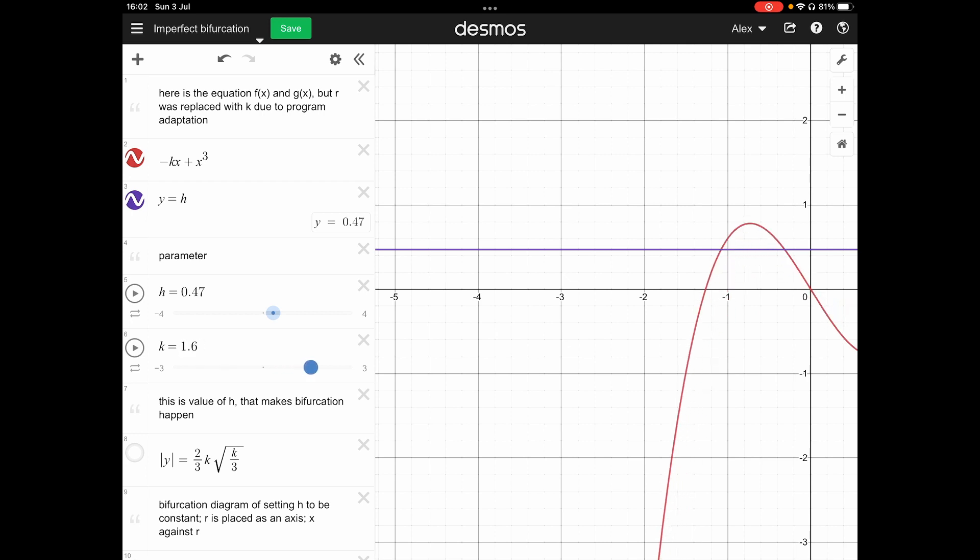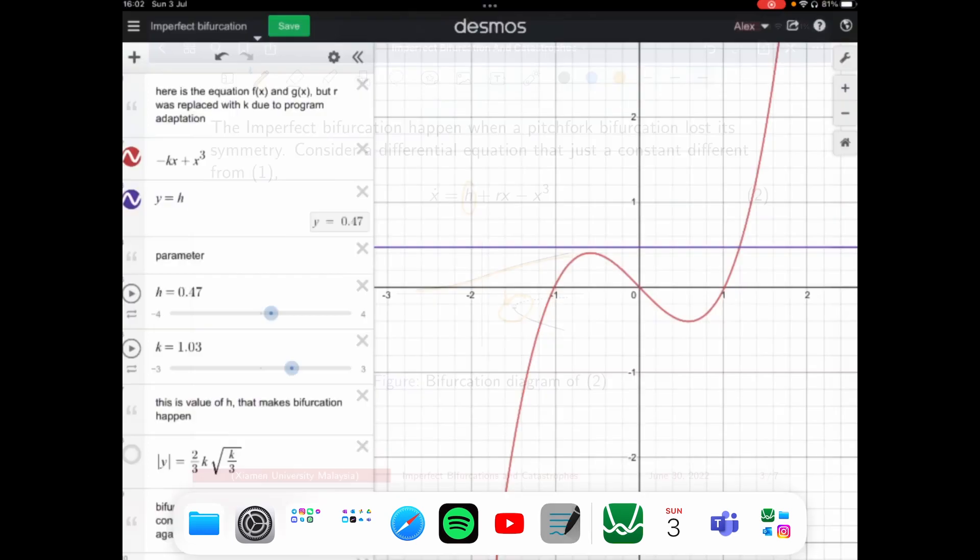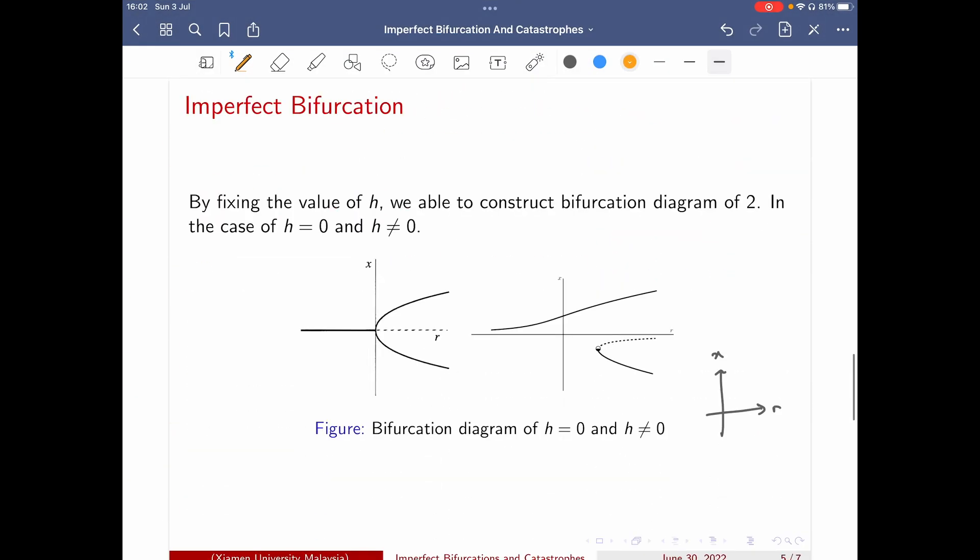Actually, it just looks exactly like a saddle-node bifurcation. A saddle-node bifurcation will be happening. But if you look at the whole picture, we call it imperfect bifurcation. So let's look into another part.